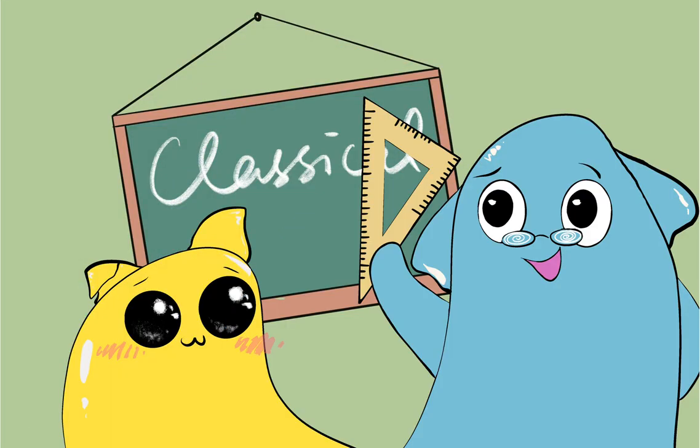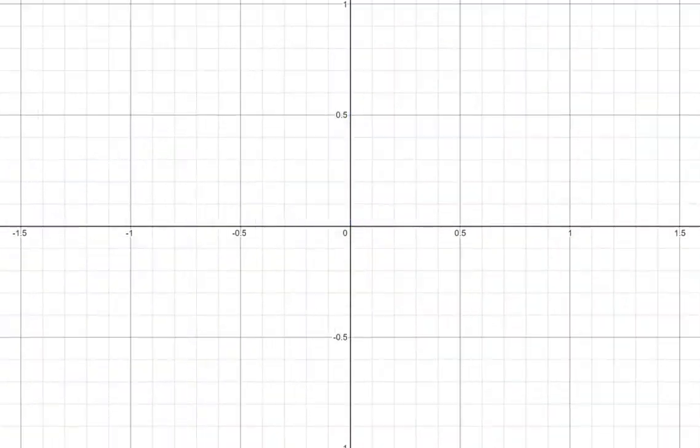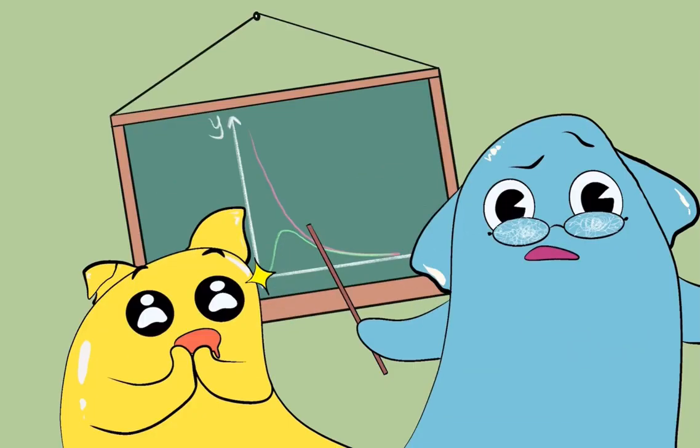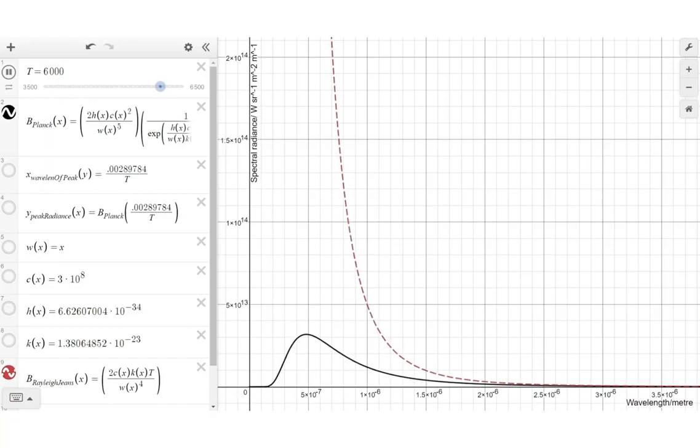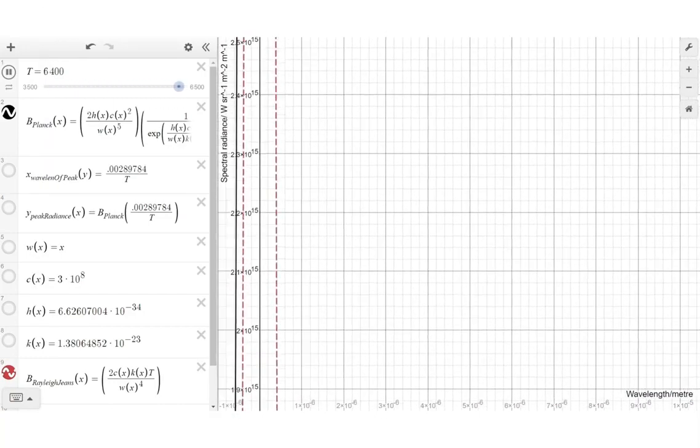With the knowledge of classical physics, they assumed that each wave carries the same energy and variables can take any value. In the end, the curve looked like this. Wait, has the y-axis become an asymptote? Exactly!